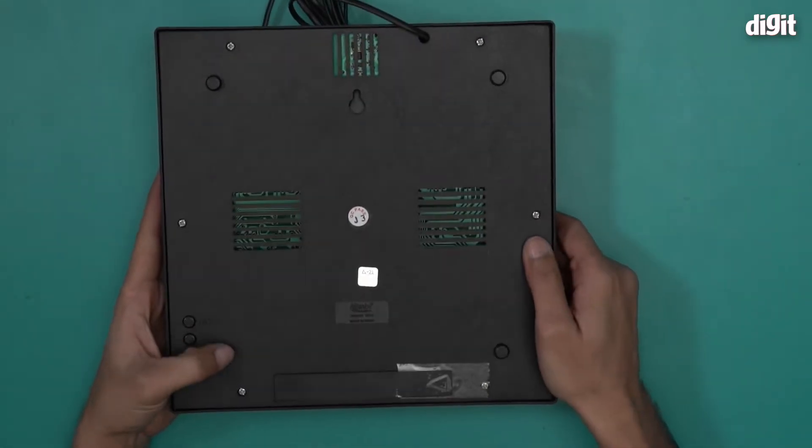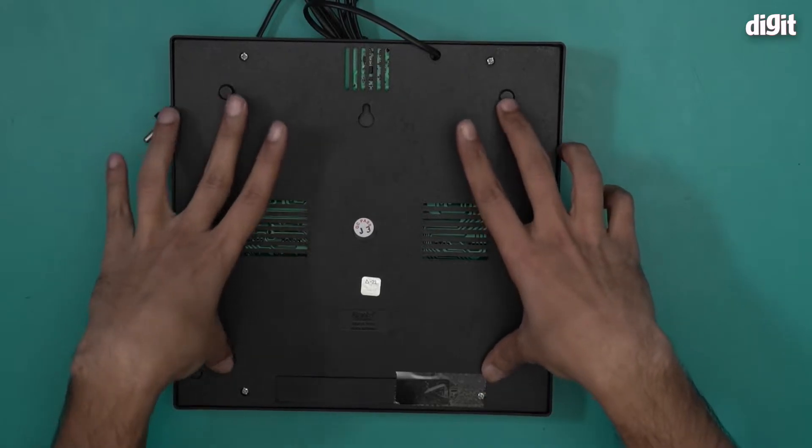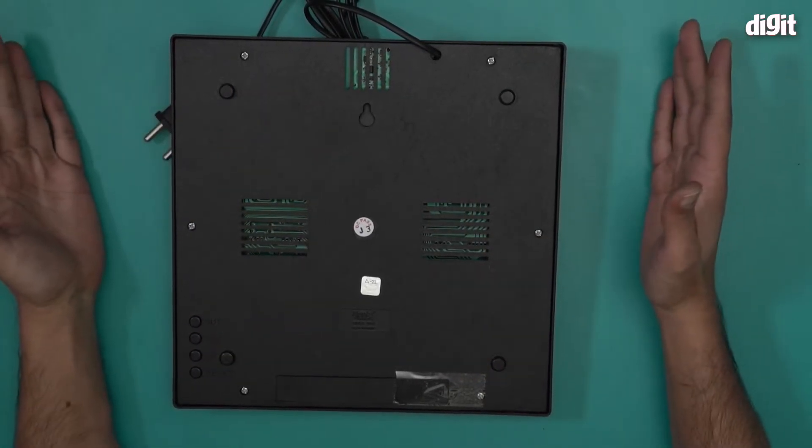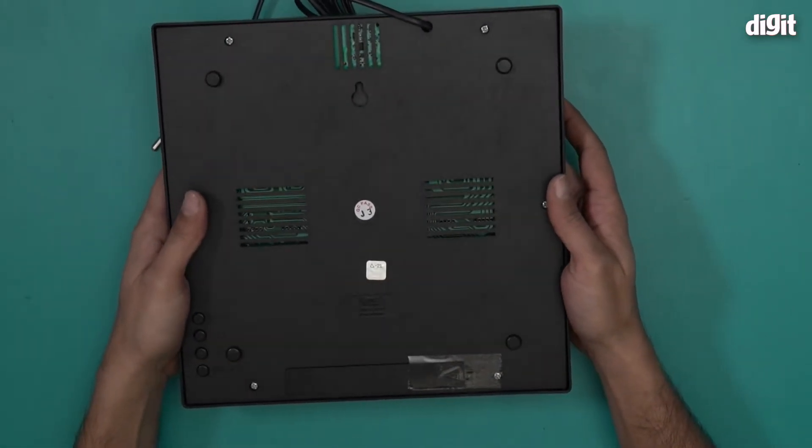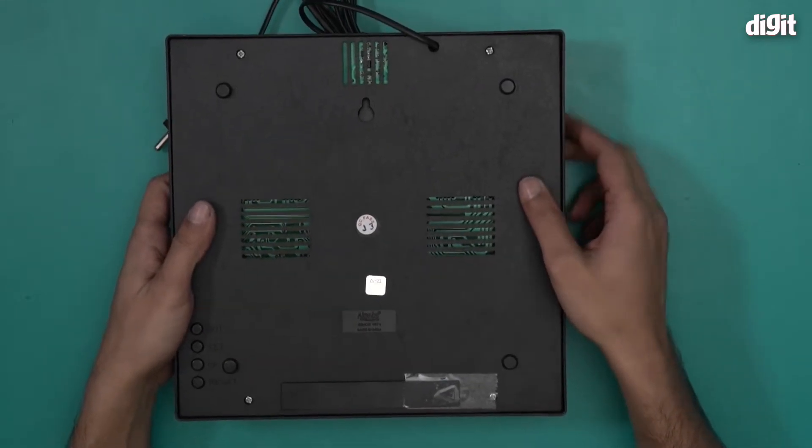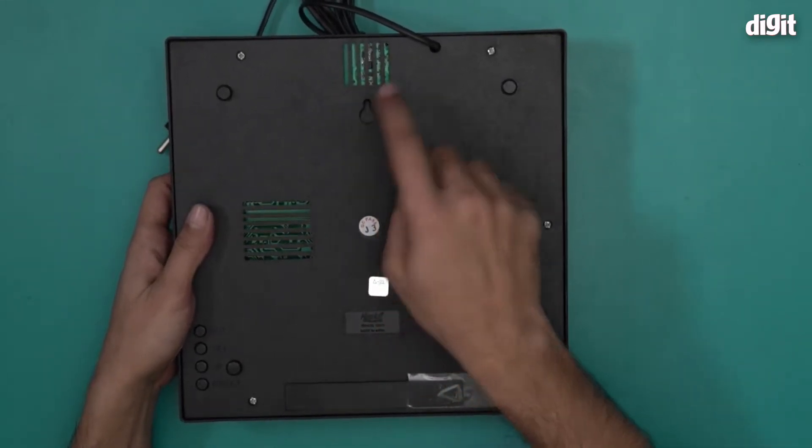Let's see what's at the back. There are these four stops for when you want to keep it on a flat surface, but ideally you should be mounting this and for that you have this wall mounting groove right over here.